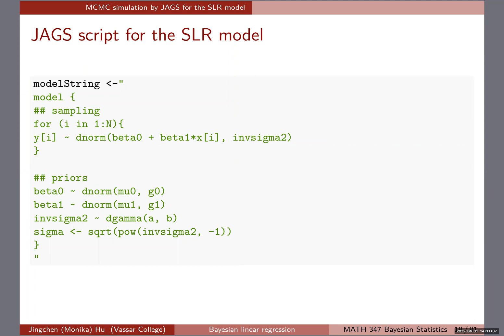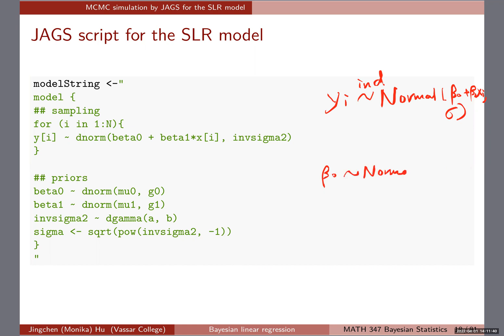The JAX script is very descriptive of the model itself. When I try to write a JAX script, I write down what the model is and then do it side by side. At the sampling stage, we have yi follows Normal(beta0 + beta1*x, sigma), where sigma is the standard deviation. Beta0 follows a normal prior, beta1 follows a normal prior, and 1/sigma² follows a gamma prior.